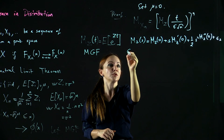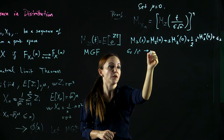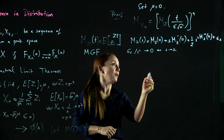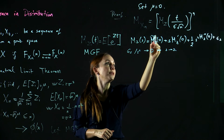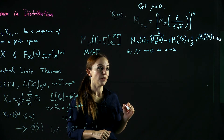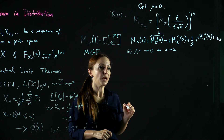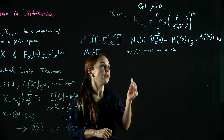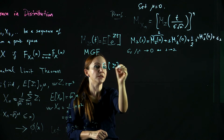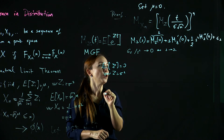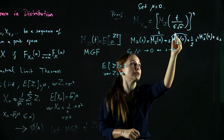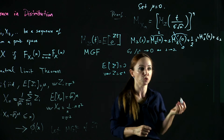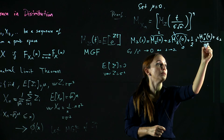Now, mz(0) = 1 by definition of a moment generating function. Since the expectation of z is 0, the first derivative mz'(0) equals 0, so that term vanishes. Since the expectation is 0, the second derivative mz''(0) equals the variance, which is sigma squared.